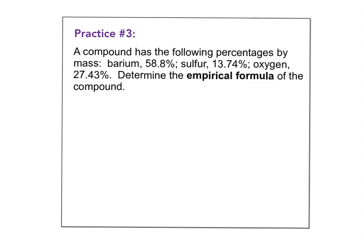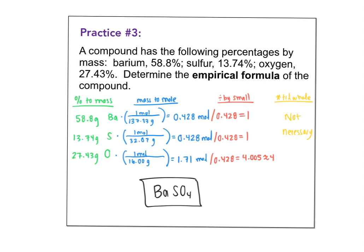Last one for empirical — pause the video and try this one. Hopefully you got BaSO4. Going through percent to mass, mass to mole, divide by small — multiplying till whole was not necessary. You may notice it wasn't perfect, but we round to the nearest whole number. In this case, 4.005 was very close to 4, so we just rounded to 4.